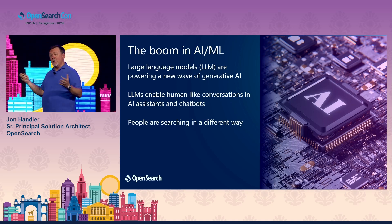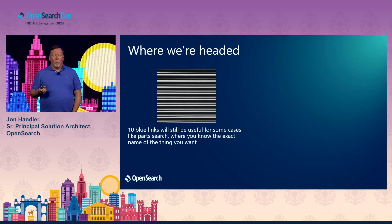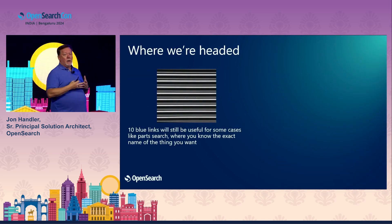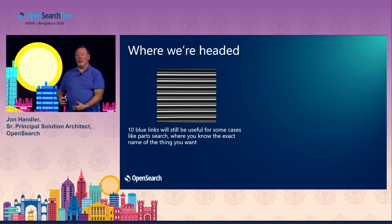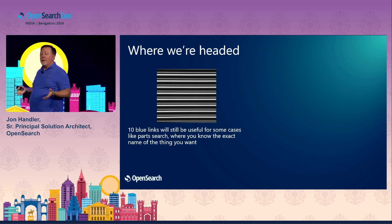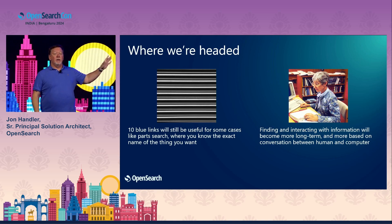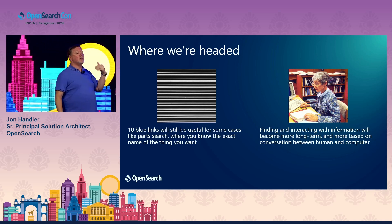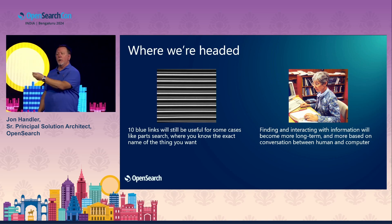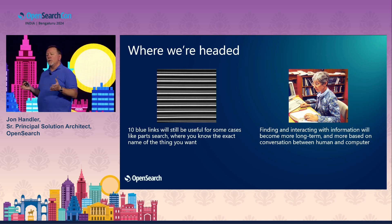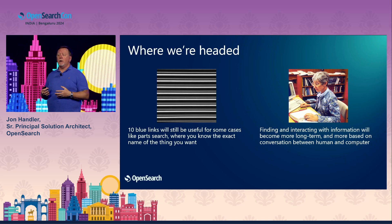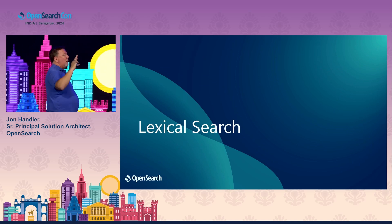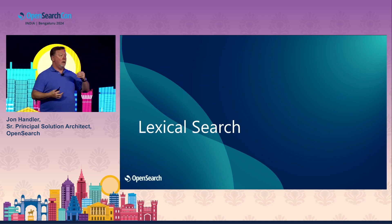There's a different model of searching coming to the fore. We used to have the 10 blue links — you'd go to Google, put a search in, get 10 blue links. That was the paradigm of searching. Exact search stays for a long time, but we're moving into a world where finding information is really more conversational and less about one-shot matching. Language is how we mediate with the search engine.